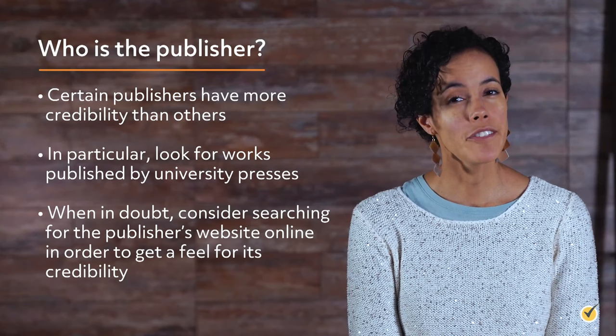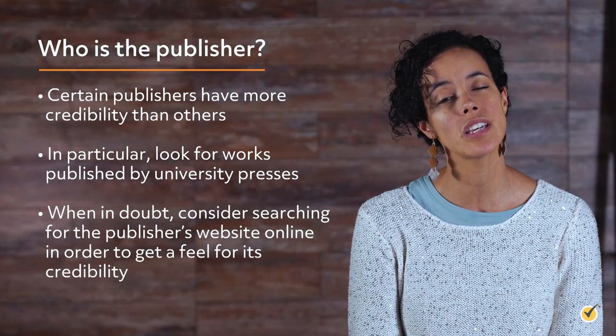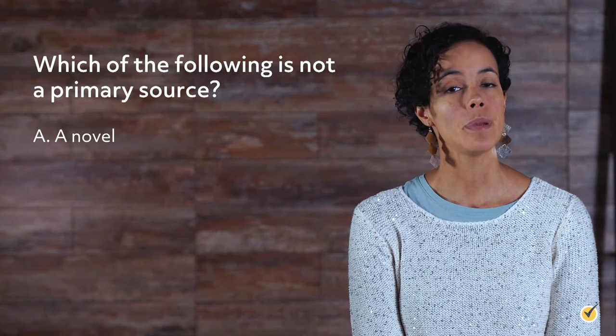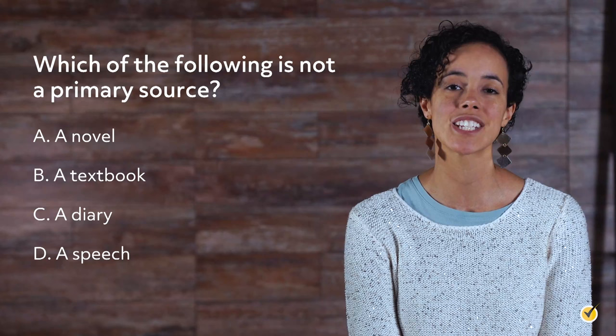Lastly, who is the publisher? Anyone with enough money can start a publishing house, but certain publishers have more credibility than others. In particular, look for works published by university presses. Though these are not the only credible sources, they are usually a safe bet. When in doubt, consider searching for the publisher's website online to get a feel for its credibility. Finally, let's look at a review question: which of the following is not a primary source? The correct answer is B, a textbook — a textbook is a secondary source because it expounds upon or comments on other sources.